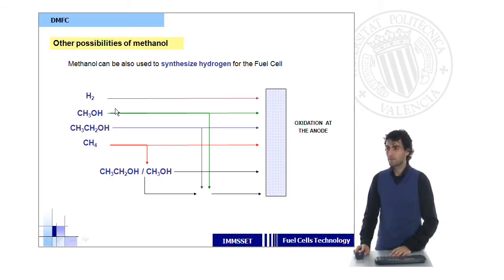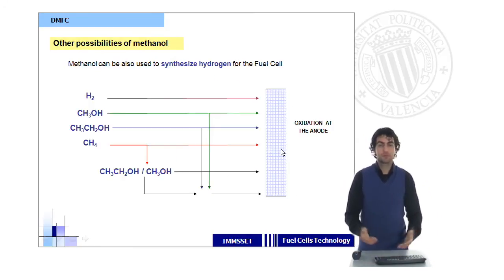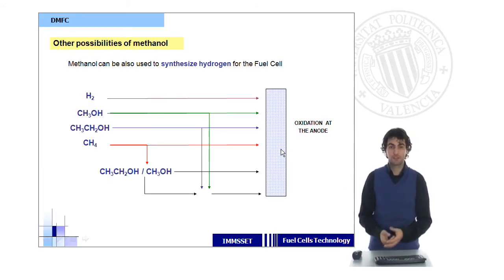We can either have, we can either use methanol or ethanol in this case, directly for the oxidation of the anode. Or we can reform it to form hydrogen, which is hidden here, and then use hydrogen at the anode. This will depend on which is your strategy or your strategy for your fuel cell, and which is the cost of the operation.